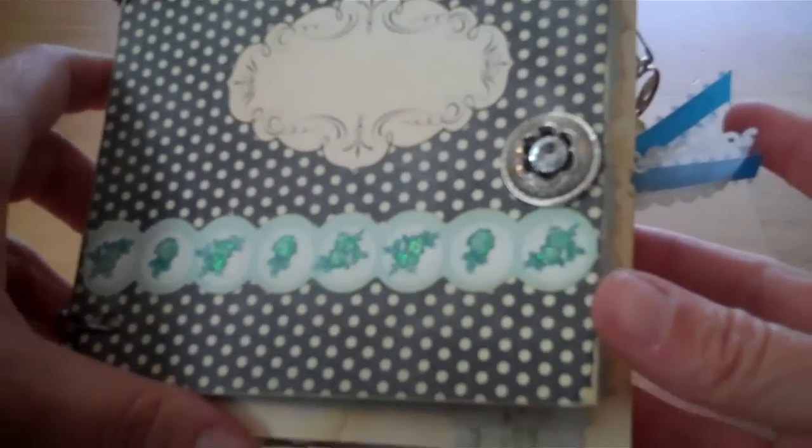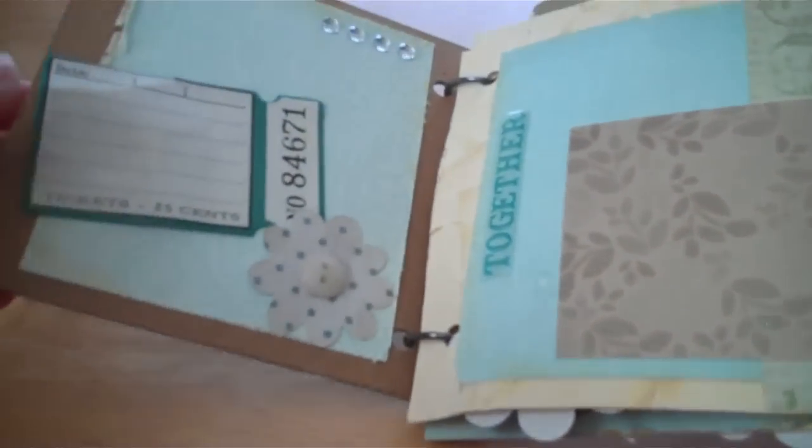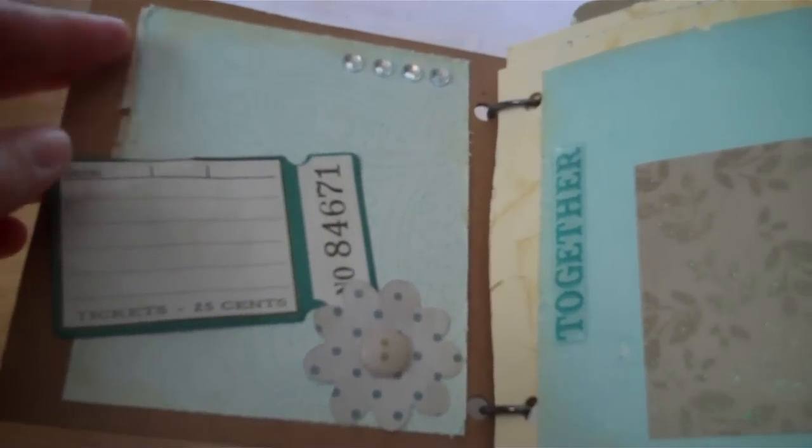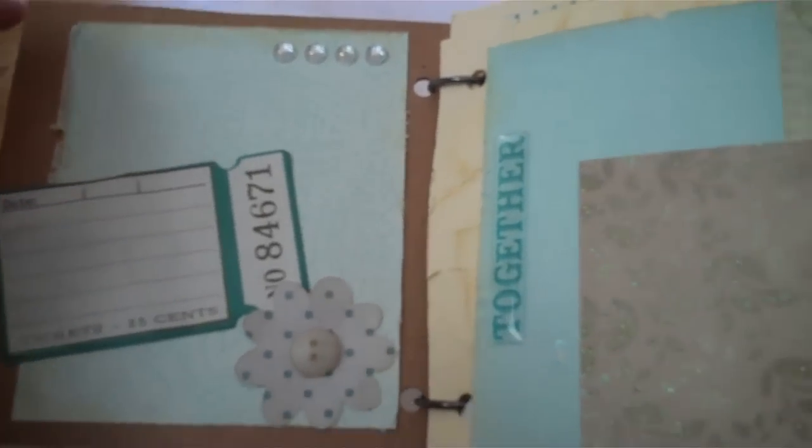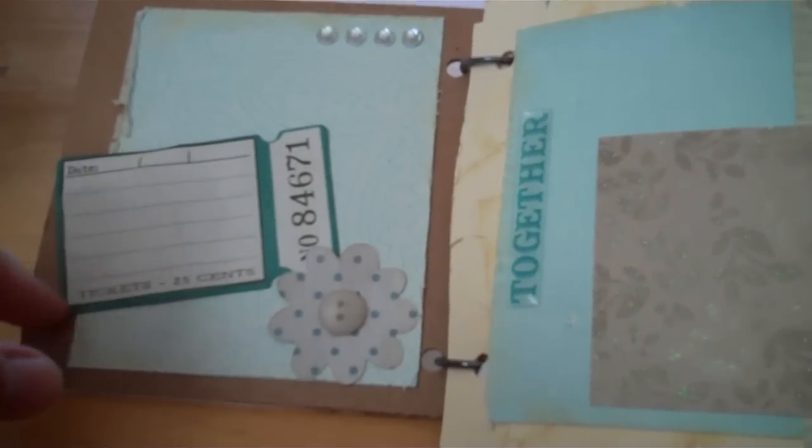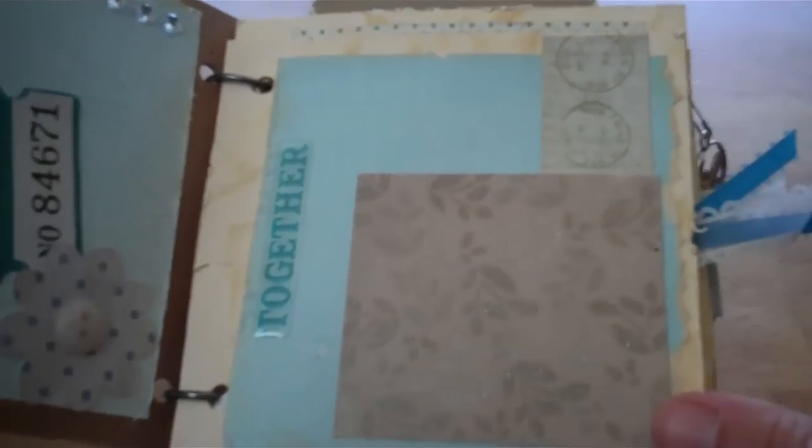Hi, this is the latest little mini I just made, and I made it very distressed and very aged looking. I used the zutter on all of my pages, and I used antique linen ink to ink up as much as I could.